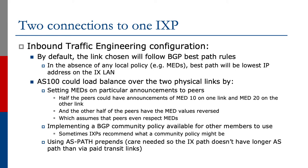Inbound traffic engineering by default would follow the link chosen according to BGP best path rules. In the absence of any local policy — again, for example, MEDs sent to other peers — the best path will be the lowest IP address on the IX LAN. AS100 could balance over the two physical links by setting MEDs on particular announcements to peers.